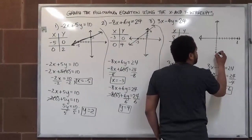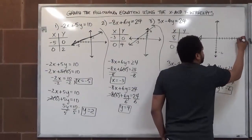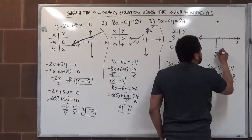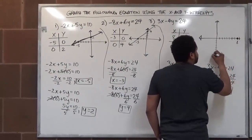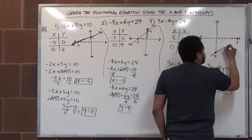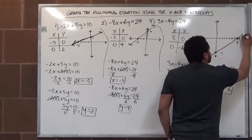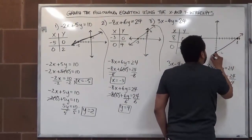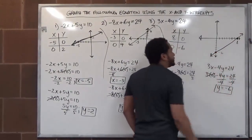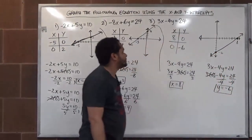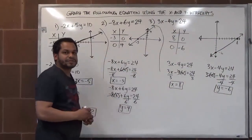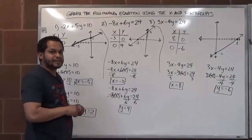Here are our two points. We go eight over from the origin for our x intercept, and six down for our y intercept at negative six. We connect the dots — make sure you use a straight edge when connecting your dots. And that covers our equations. Thank you.